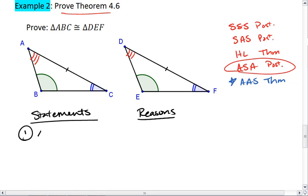First, I'm given that angle B is congruent to angle E, angle C is congruent to angle F, and side AC is congruent to side DF.